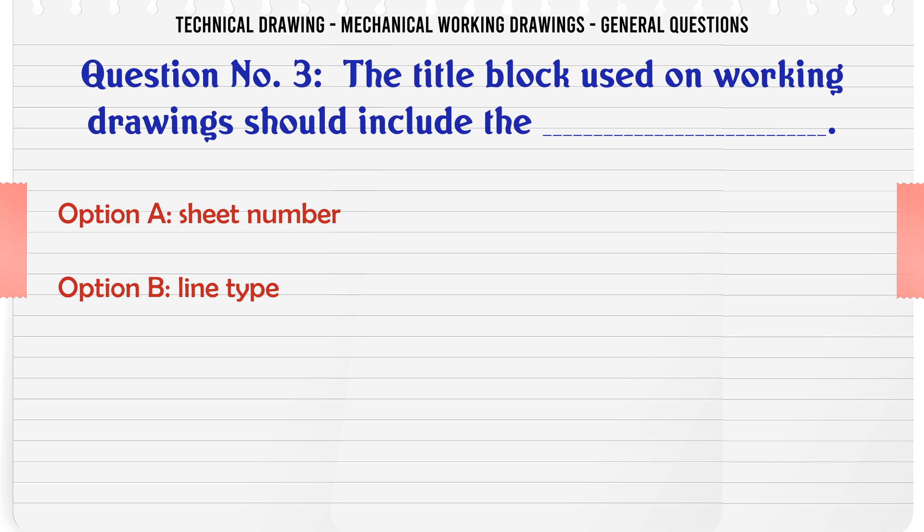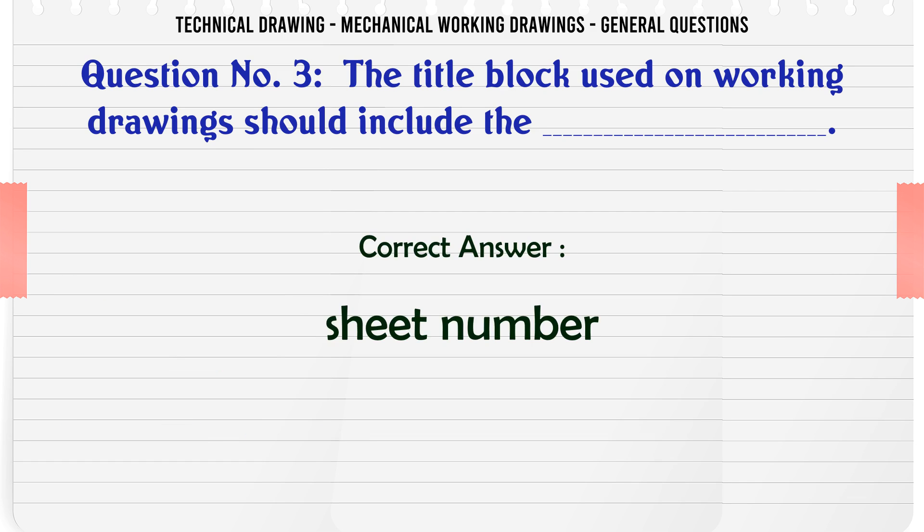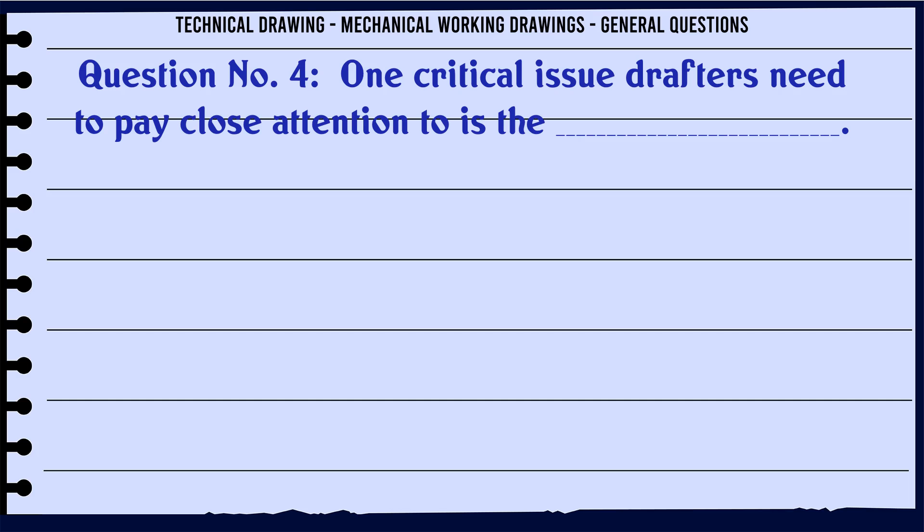The title block used on working drawings should include the: A. Sheet number, B. Line type, C. Layer set, D. All of the above. The correct answer is Sheet number.